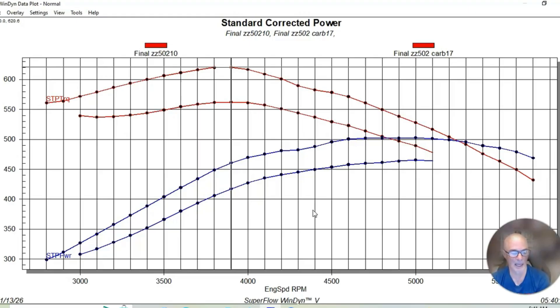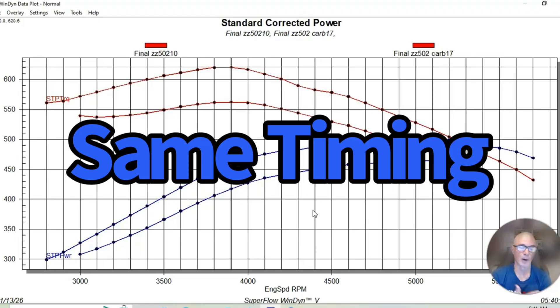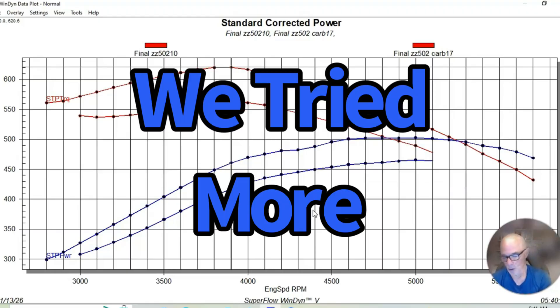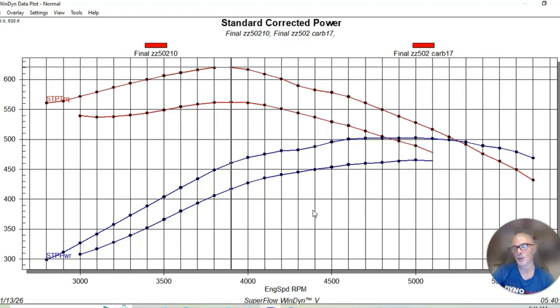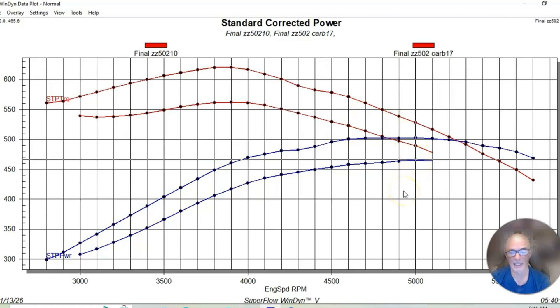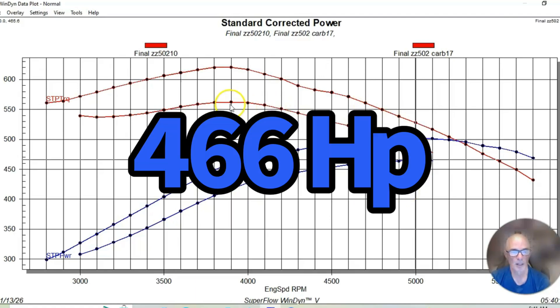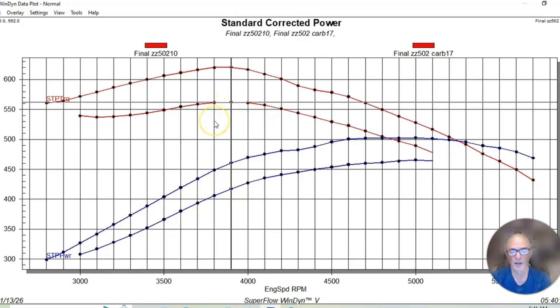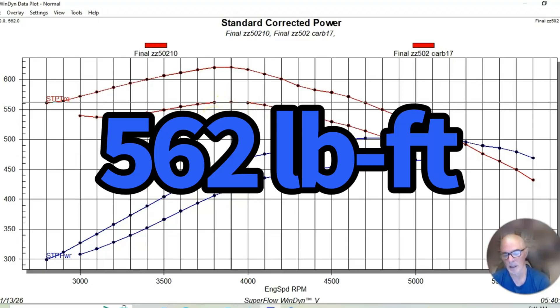We ran this thing with a half inch open spacer between the carburetor and the intake manifold so we could use that as a MAP signal to continue to get a MAP signal so we could put the timing curve in there. At wide open throttle, we basically had the same timing curve that we had when we ran the thing when it was fuel injected. The carburetor supplied fuel, the fuel injection supplied the timing curve, and this all worked out good.